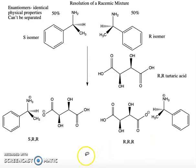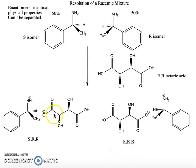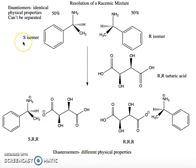What I want you to notice about these salts is that they're no longer enantiomers. The enantiomer of R,R,R would be S,S,S. So the R,R,R and the S,R,R isomers are not enantiomers — they're diastereomers. And unlike enantiomers, diastereomers have different physical properties.